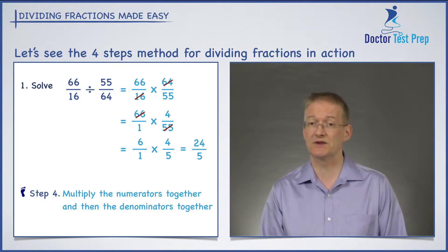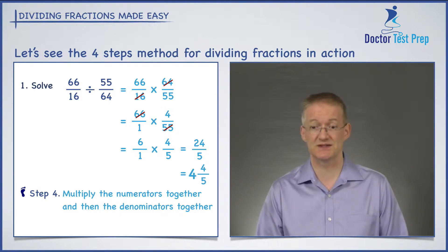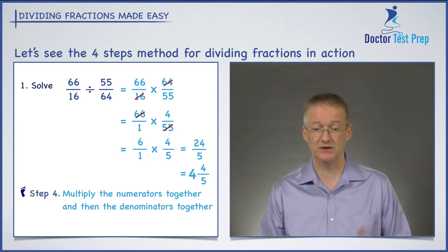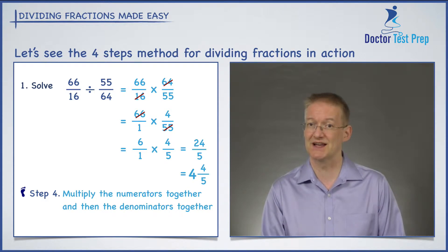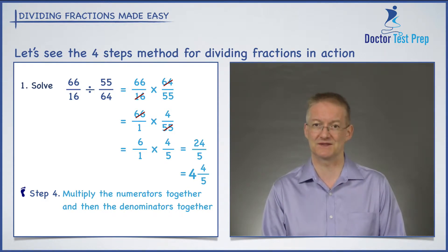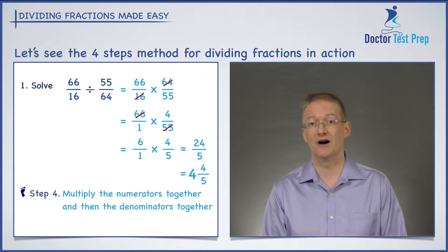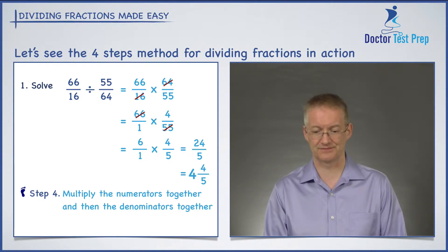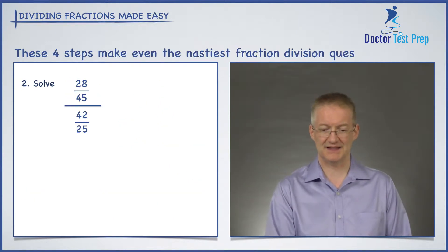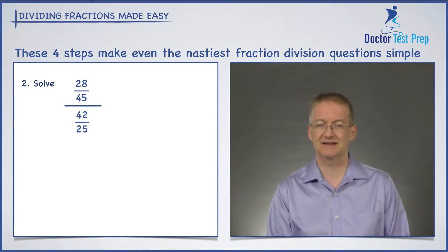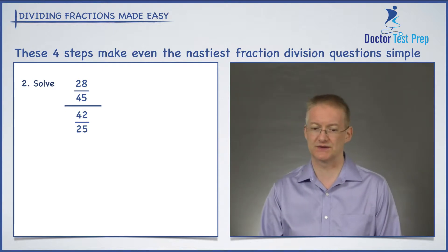If I wanted to convert that into a mixed number — nice and straightforward — 5 into 24 goes 4 times and 4 fifths are left over. So 24 over 5 is 4 and 4 fifths. Okay, let's take a look at another question.